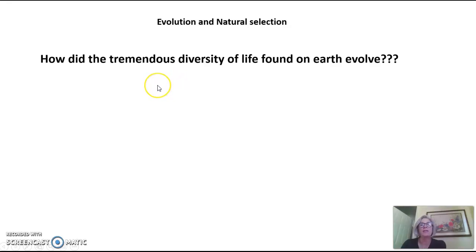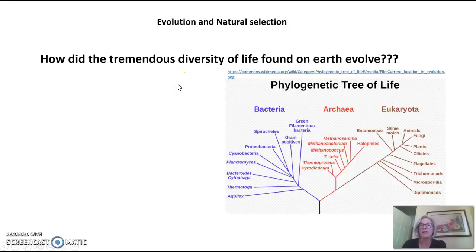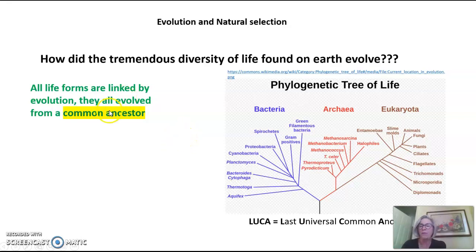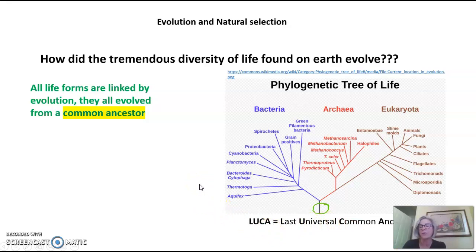So how did the tremendous diversity of life found on earth today evolve? If we look at a phylogenetic tree of life, which shows the three domains — bacteria, archaea, and eukaryota — what we see is that all life forms are linked. They're linked by evolution. They all evolved from a common ancestor. We often refer to this common ancestor as the last universal common ancestor, and I've circled in green on the phylogenetic tree where you would find the last universal common ancestor.